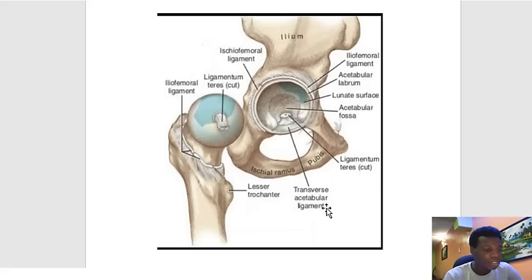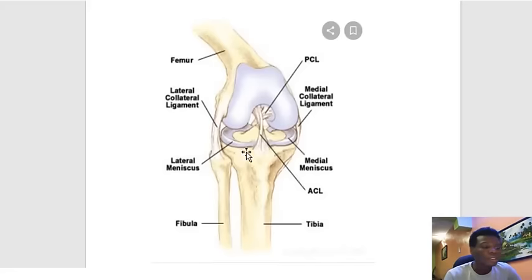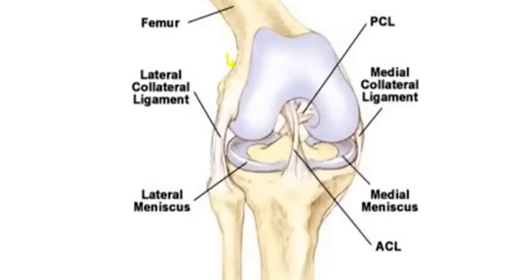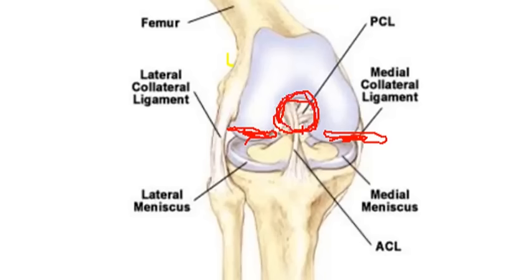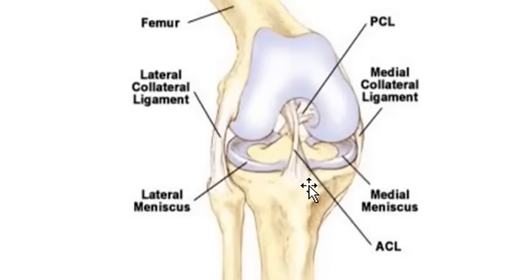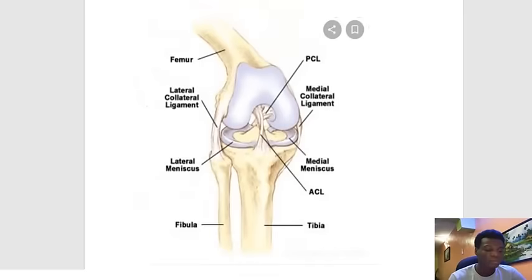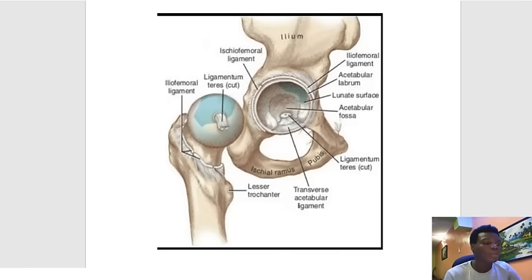Here is a picture of the cruciate ligaments. This is the distal part of the femur, showing the lateral condyle, the medial condyle, and in between the intercondyloid fossa — where the anterior and posterior cruciate ligaments are inserted. As a matter of fact, those ligaments take their origin from the intercondyloid fossa or eminence of the tibia.